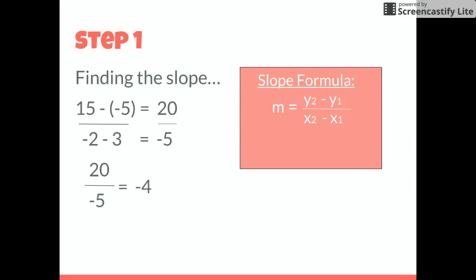The first step is finding the slope of line AB. In order to find the slope, you need to use the slope formula, which is M equals Y2 minus Y1 over X2 minus X1, as shown in the right corner. Then plug in the two ordered pairs so that the equation will be M equals 15 minus negative 5 over negative 2 minus 3.